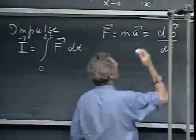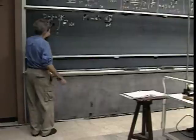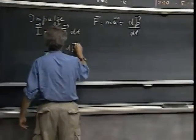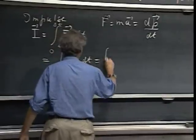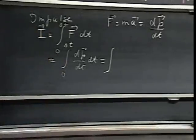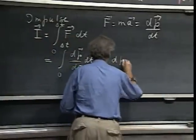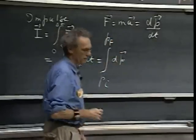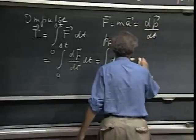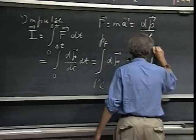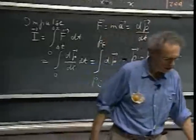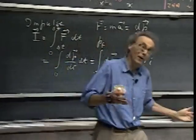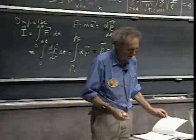Now F equals ma, which is also dp/dt — the rate of change of momentum. Substituting that in, I find the integral from zero to delta t of dp/dt times dt, which gives me the integral over dp from initial momentum p_i to final momentum p_f. That is simply the final momentum minus the initial momentum. So what an impulse does is change the momentum. A force acts on something for a short amount of time and gives it a change in momentum.